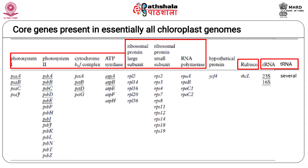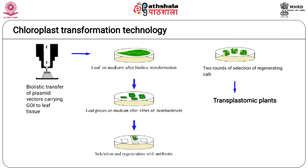The biolistic approach is most popular in chloroplast transformation. E. coli plasmids in which a selectable marker gene and the gene of interest are cloned are introduced into chloroplasts of detached leaves using the biolistic method. The leaf is then cut into pieces and grown on a regeneration medium containing the appropriate antibiotic depending on the selectable marker used. After two rounds of selection, the regenerated plants are transplastomic with the gene of interest inserted in the plastid genome.